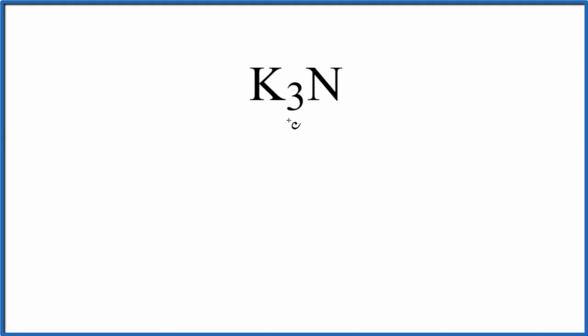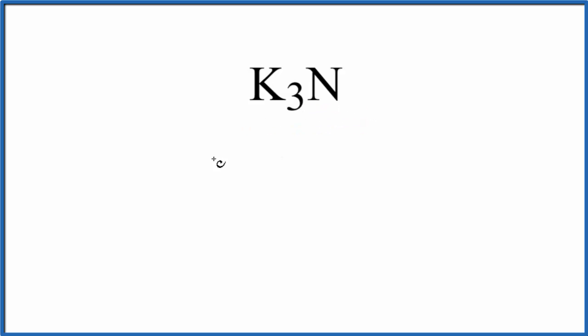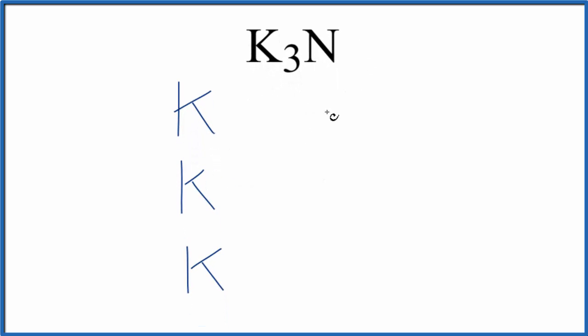In this video, we'll write the Lewis structure for K3N. This is potassium nitride. So the first thing we'll do — we have three potassium atoms, so let's just put those right here. And then one nitrogen atom.